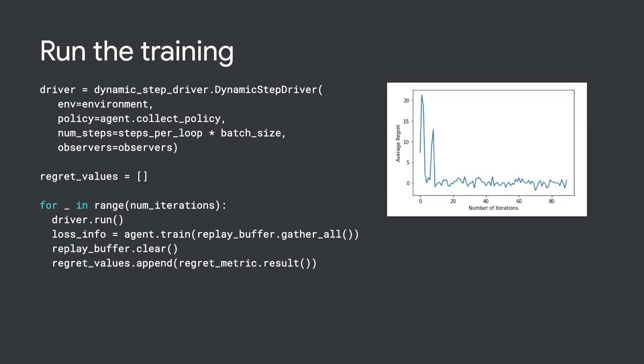You can see in the training graph, the average regret quickly decreases to around zero. This means we have found the optimal policy here.